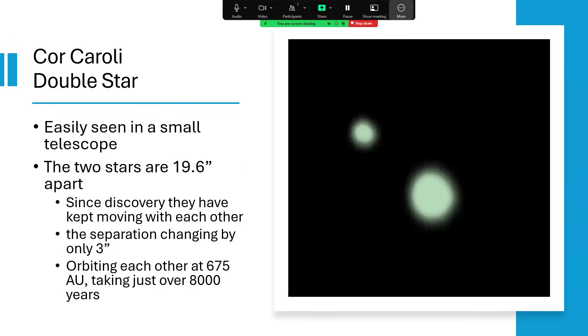It's a double star, easily separated with a small telescope. The two components are nearly 20 arc seconds apart. It's a lovely image of the two of them here on the right. It's been tracked for several hundred years since the double nature was identified, and the separation has changed a little bit by about three arc seconds as they orbit around each other, which takes over 8,000 years to complete.